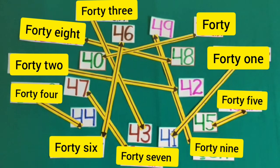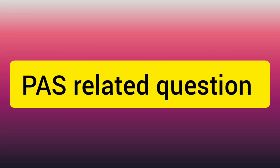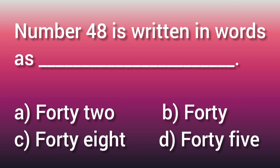Kids, we have done the exercise to match the numbers in figures and the numbers in words. Now, it's time for the practice question. Number 48 is written in words as blank. Four options are here. Option A is 42. Option B is 40. Option C is 48. And option D is 45. Which one is the correct option? Yes. Option C. 48 is the correct option.